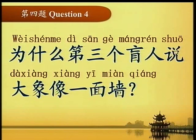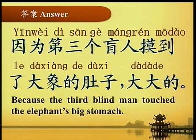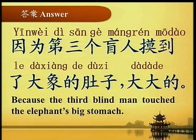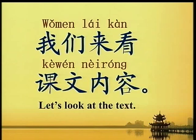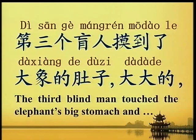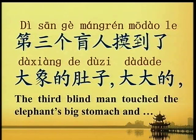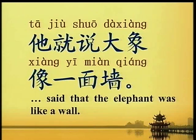为什么第三个盲人说大象像一面墙？ Why did the third blind man say the elephant was like a wall? 答案：因为第三个盲人摸到了大象的肚子，大大的。 Because the third blind man touched the elephant's big stomach. 我们来看课文内容：第三个盲人摸到了大象的肚子，大大的，她就说大象像一面墙。 Said that the elephant was like a wall.